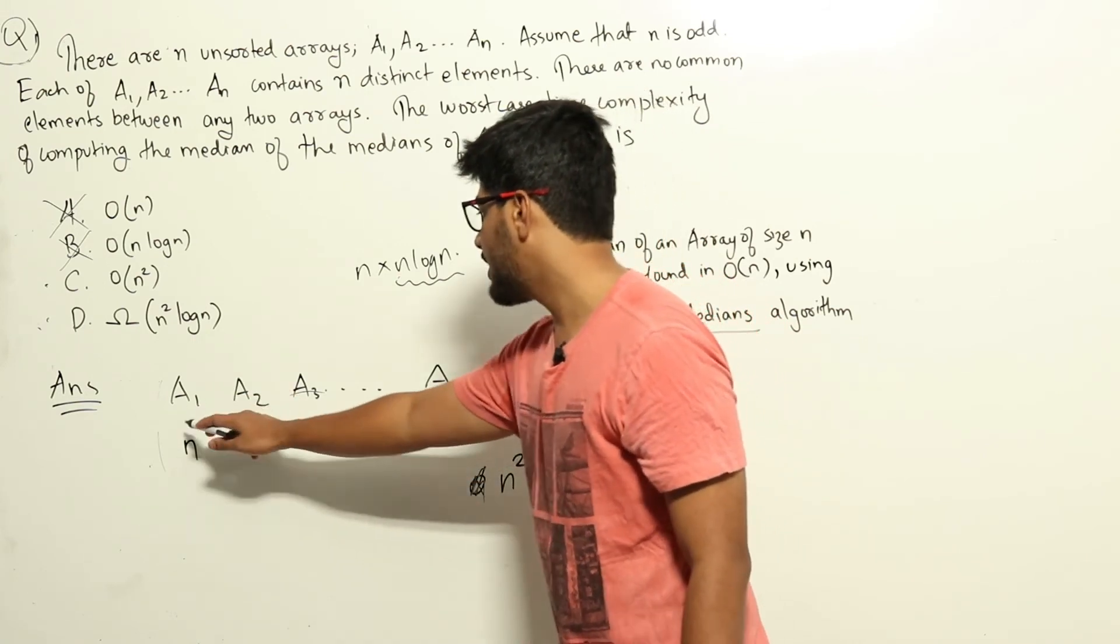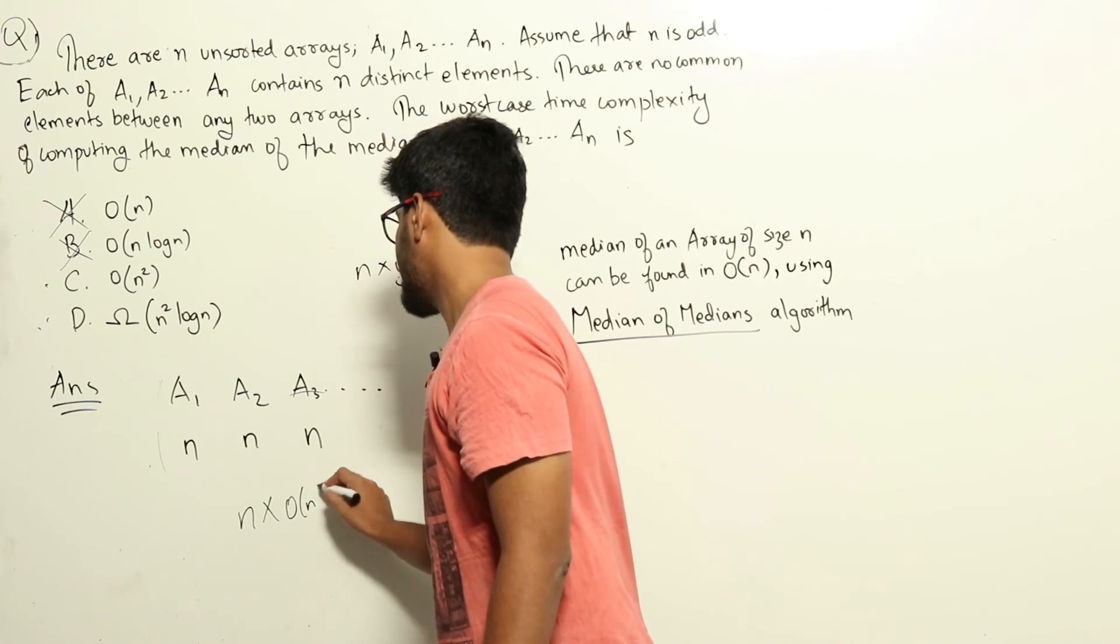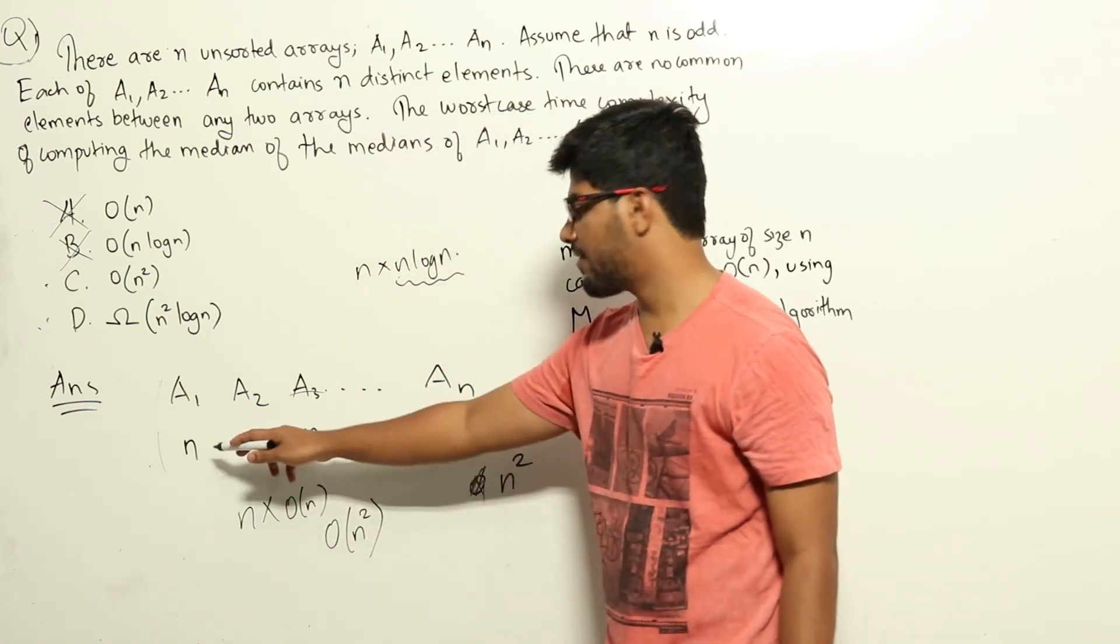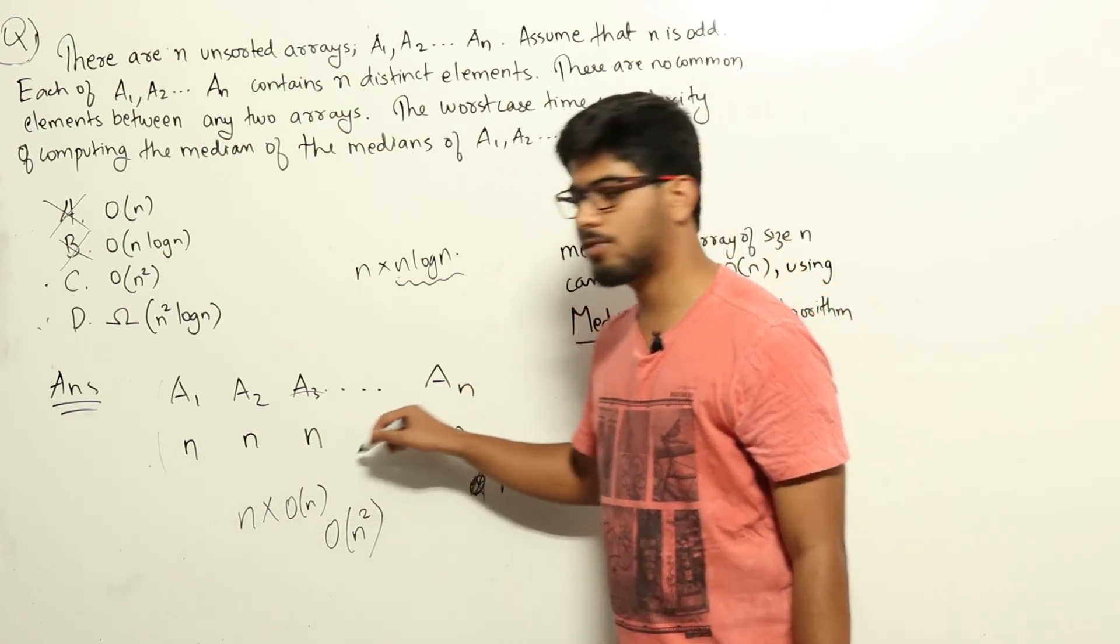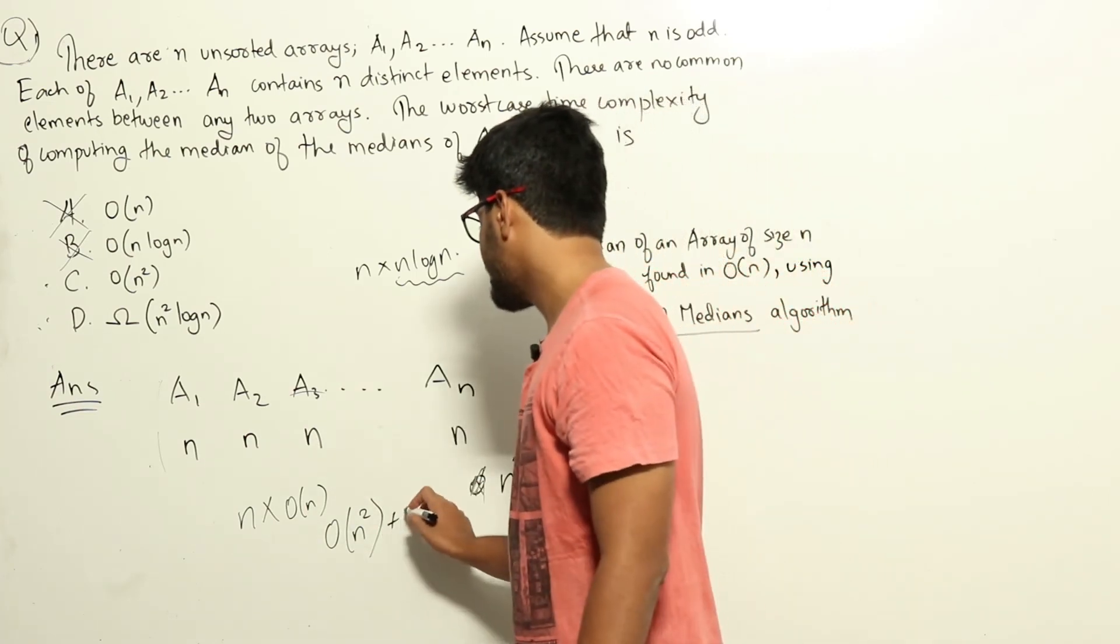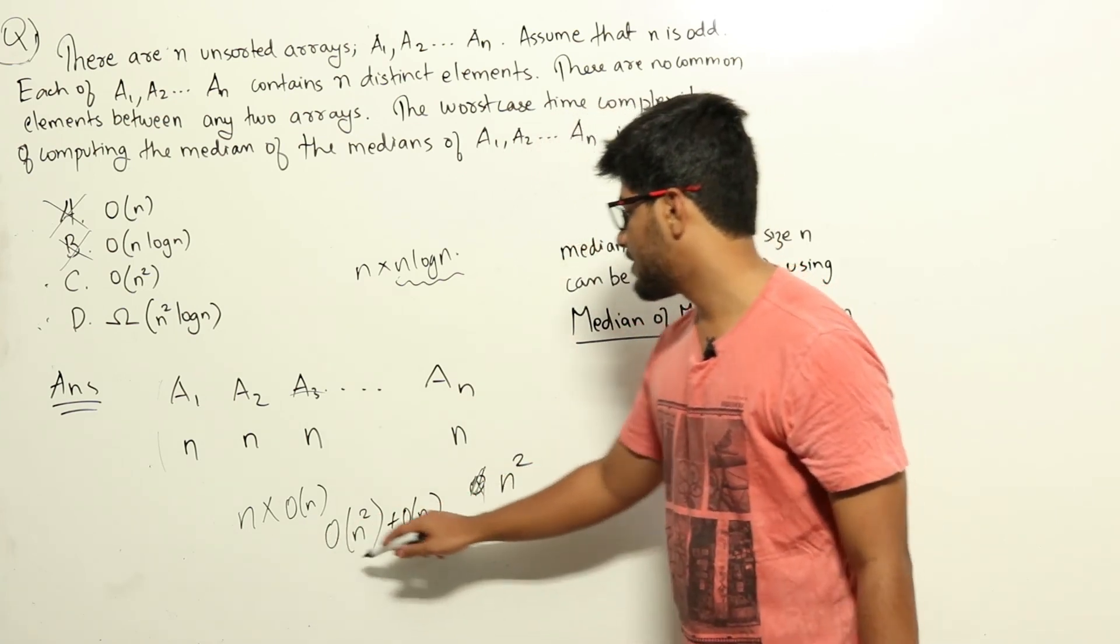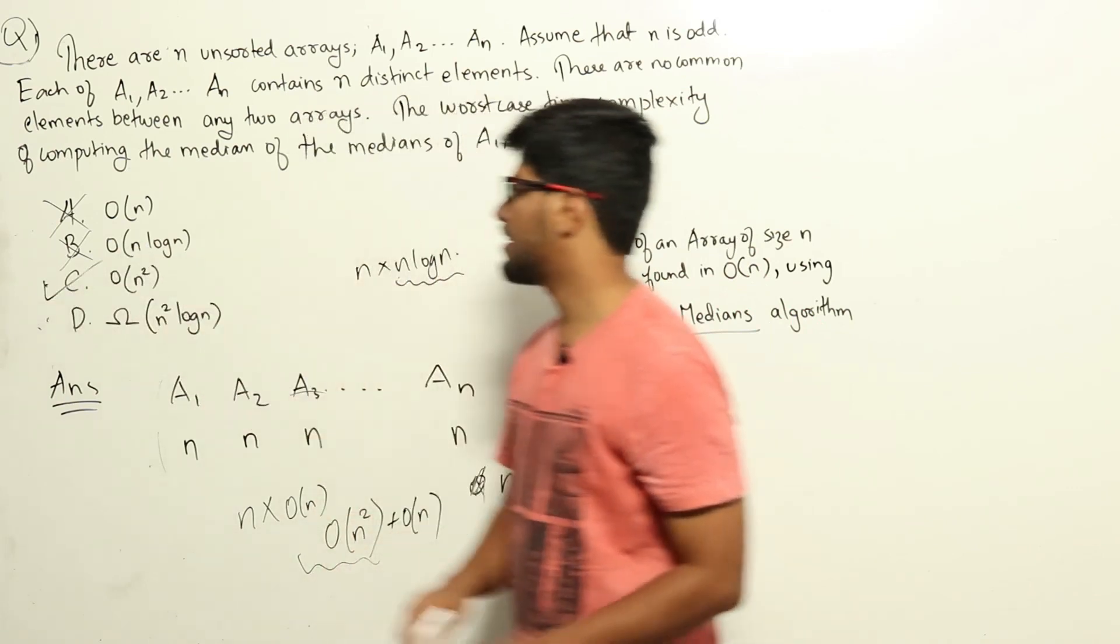Meaning, I can get the median of n arrays in n into O(n) time. That is O of n square. Plus, after that, I have n medians and n medians will form another array of size n. Finding the median of that will again take another O(n) time. So, but it is O(n square) plus O(n). So that is O(n square) only. Which means that option c is the right answer.